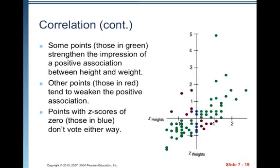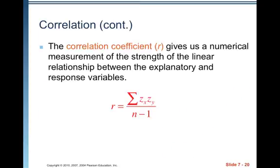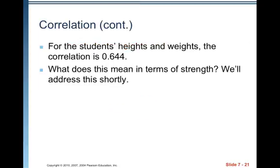Some points — those in green — strengthen the impression of a positive association between height and weight. Other points — those in red — tend to weaken the positive association because they tend to run the other direction. Points with z-scores of zero — those in blue — don't vote either way. The correlation coefficient r gives us a numerical measurement of the strength of the linear relationship between the explanatory and response variables. For the students' heights and weights, the correlation is 0.644. We'll address what this means in terms of strength shortly.